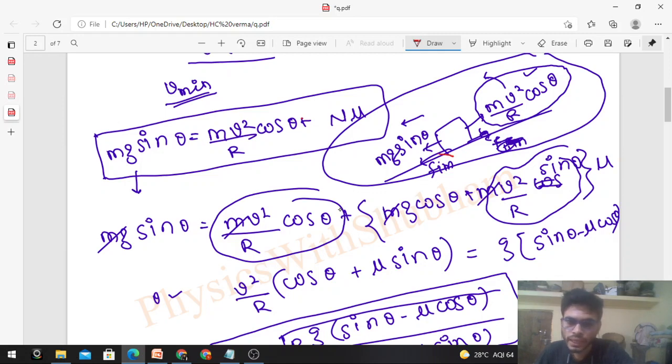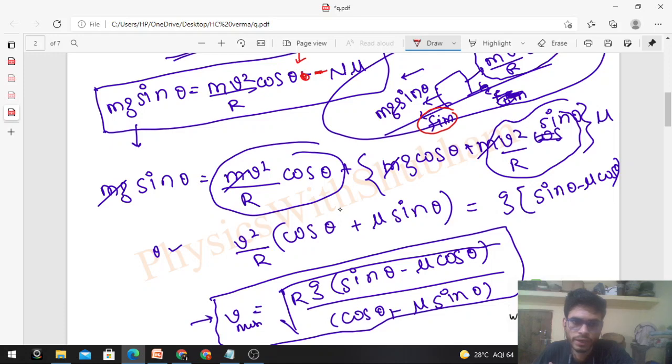From this equation, the velocity that comes out is v minimum. Let's solve it: mg sin theta equals mv square upon r - remember the v here is v minimum - into cos theta, plus n into mu. Put the n equation from earlier: n equals mg cos theta plus mv square upon r sin theta. So we get mg sin theta equals mv square upon r cos theta plus mu times mg cos theta plus mv square upon r sin theta. From here you can find the velocity.